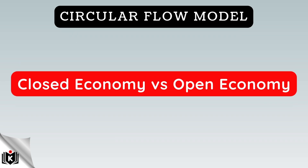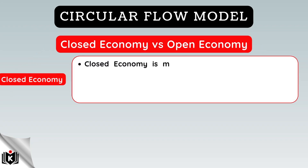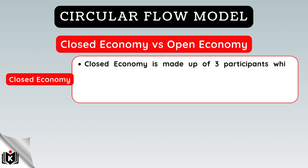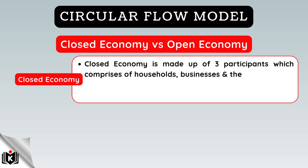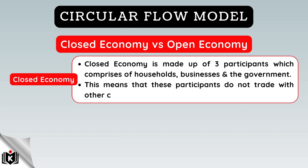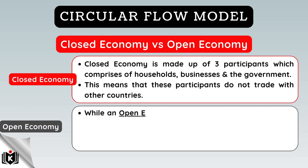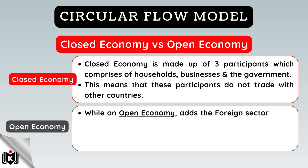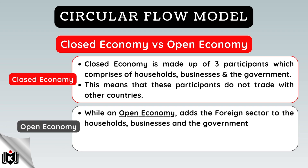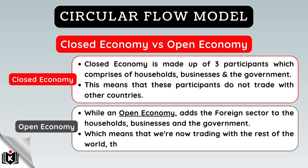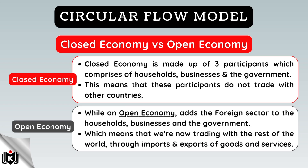As indicated in our illustration, the circular flow model can be represented either through a closed economy or an open economy. A closed economy is made up of three participants — households, businesses, and the government — meaning these participants do not trade with other countries. An open economy adds the foreign sector, meaning we're now trading with the rest of the world through imports and exports of goods and services.